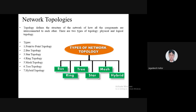There are many types of topologies: point-to-point, bus, star, ring, mesh, tree, and hybrid topology — seven topologies you have to remember. The commonly used topologies are bus topology, mesh topology, and star topology. The most commonly used topology nowadays is star topology, because the network we use today looks like a star.